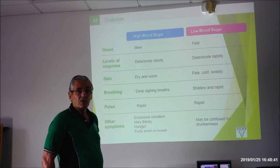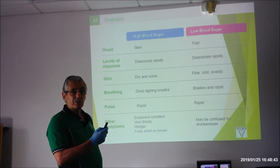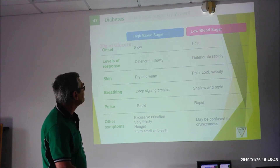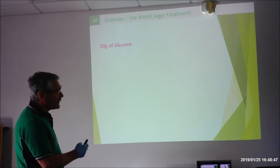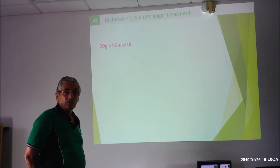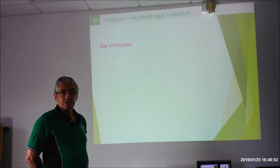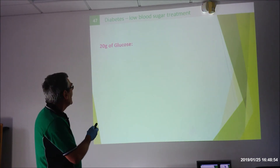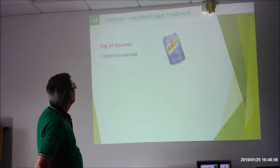So what will be your treatment for hypoglycemia and hyperglycemia? For hypoglycemia, 20 grams of glucose is the recommended adult dosage.